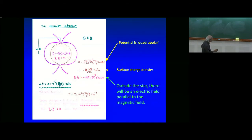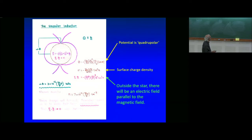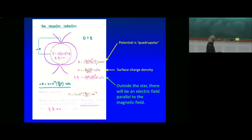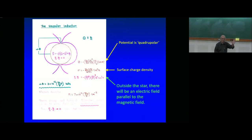From Thomson's theorem, inside the sphere there is no component of the electric field parallel to the magnetic field—if you dot this electric field with the magnetic field, the answer is zero. But there is a component of the electric field parallel to the magnetic field outside the sphere. The potential outside is quadrupolar, and using standard formulae from Griffith or Jackson, you can derive that the electric field outside is non-zero parallel to the magnetic field.